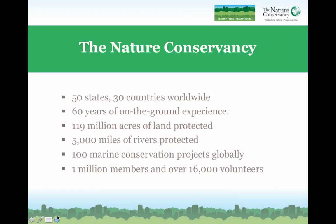Before we begin talking about our Healthy Trees, Healthy Cities program, I wanted to touch on some of the goals and successes of the Nature Conservancy. The Nature Conservancy is an international organization that currently works in 50 states and in 30 countries worldwide. We have over 60 years of experience in on-the-ground conservation. Through our science-based management efforts, we've managed to protect over 119 million acres of land, 5,000 miles of rivers, and we currently have over 100 marine conservation projects globally. We have about 1 million members and over 16,000 volunteers.